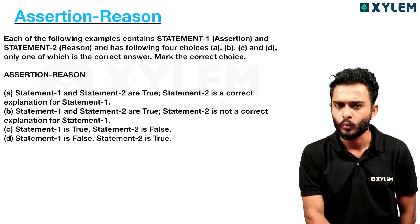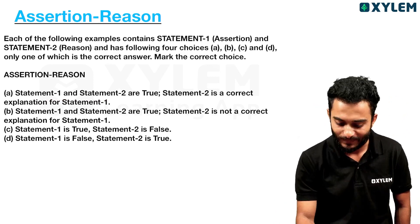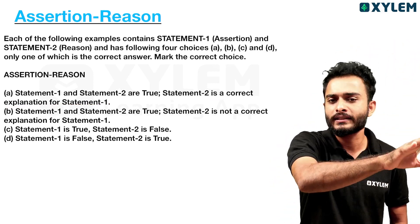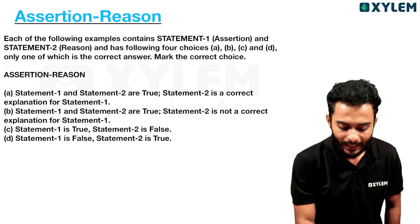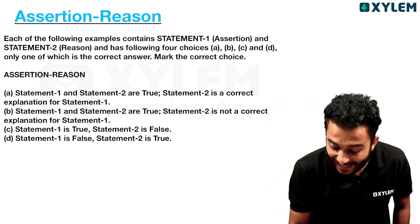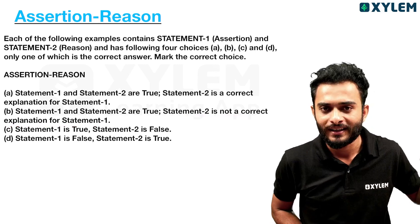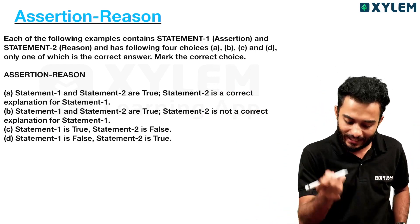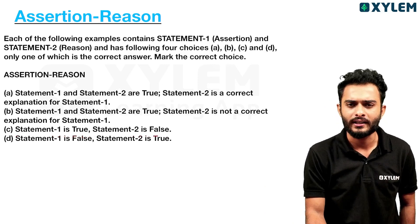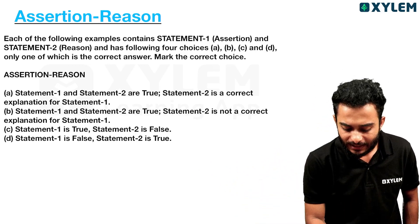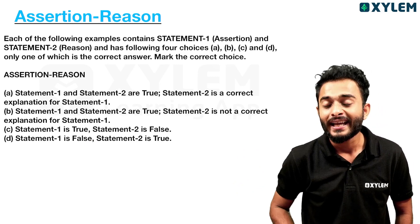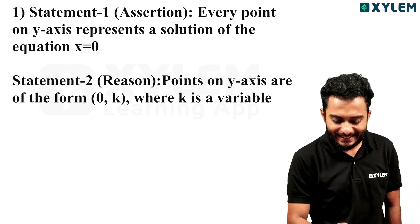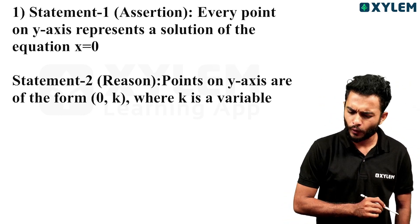Option A: Statement 1 and Statement 2 are true. Option B: Statement 1 and Statement 2 are true, but Statement 2 is not a correct explanation for Statement 1. Option C: Statement 1 is a proper explanation. Option D: Statement 1 is false, Statement 2 is true. And also: Statement 1 is false, Statement 2 is false.